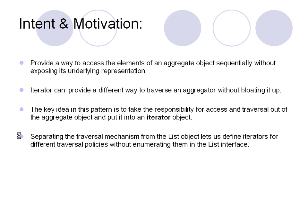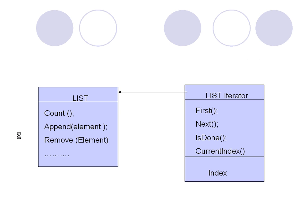The iterator object takes care of all the responsibilities of iterating through the aggregates. Separating traversal mechanisms from the list object also makes it possible to implement multiple different policies without enumerating all these things in the list. We need not list all the kinds of iterations inside the list object itself. The list implements only list-specific operations such as count, append, and remove. All traversal functions like first element, next element, and current index are moved to a list iterator.